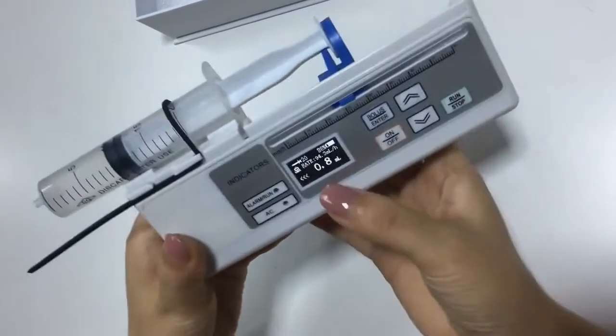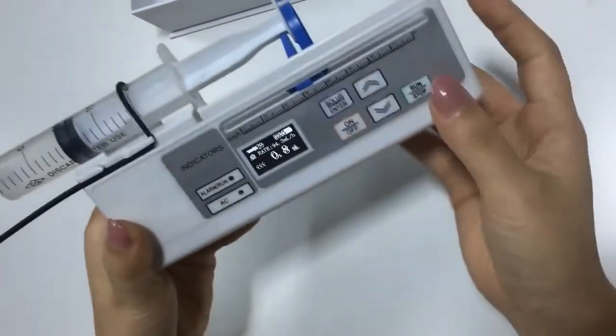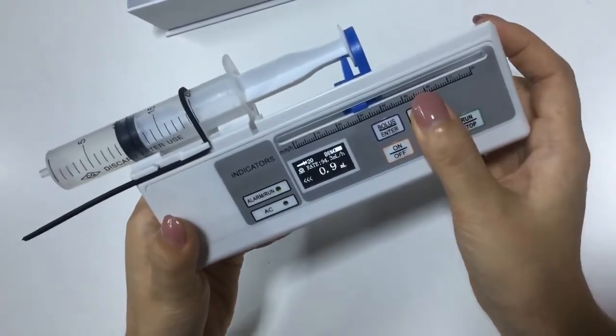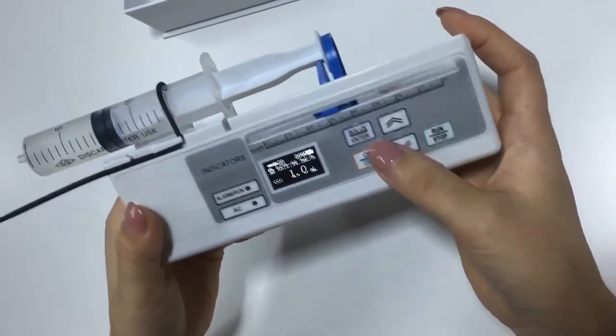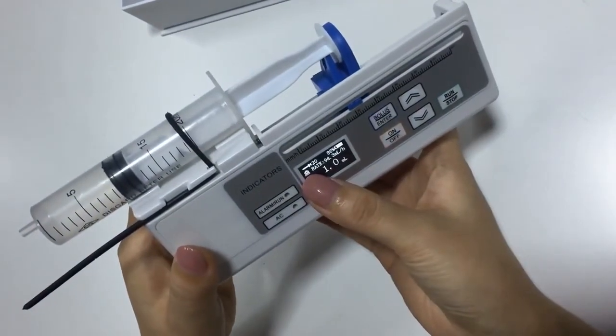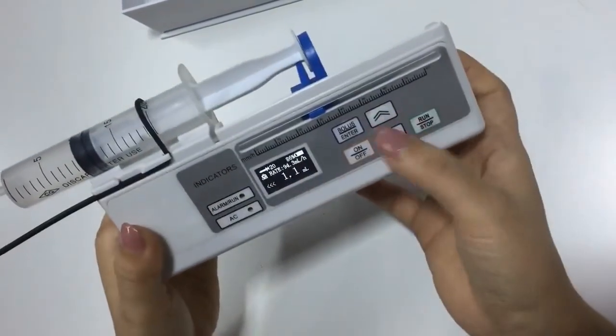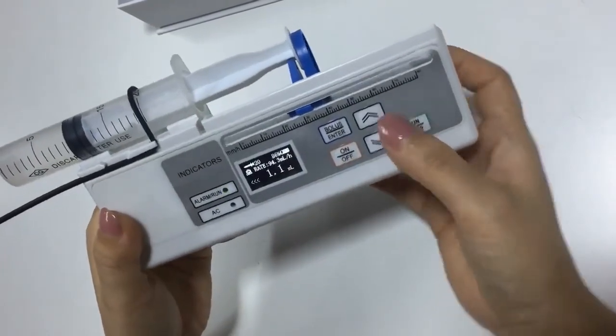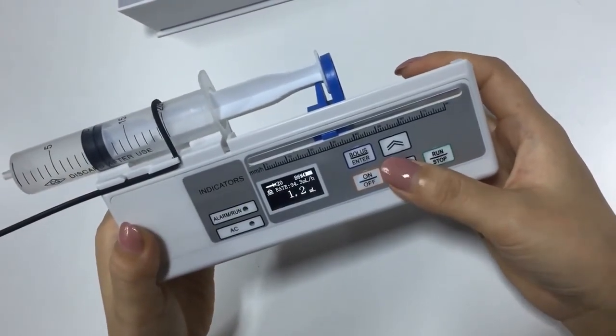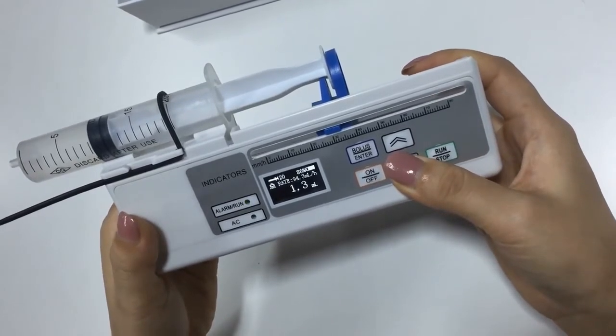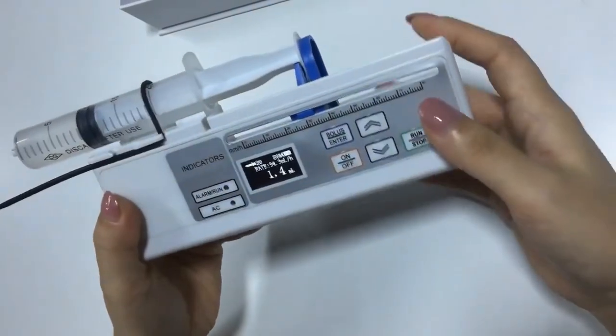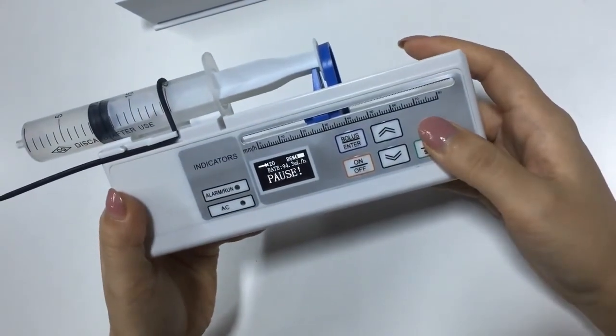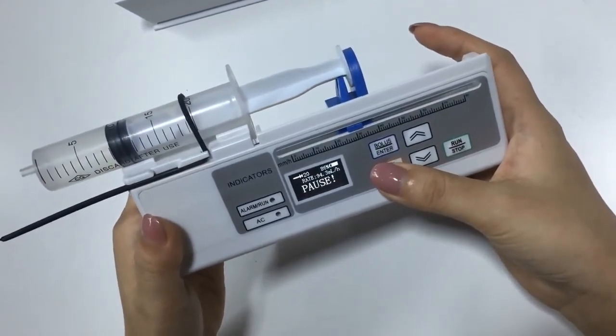Here it shows it's locked, then you cannot change the value. Once it shows up, if you need to change the parameter or stop, press the down key for a while until it is removed, then you can stop or turn off.